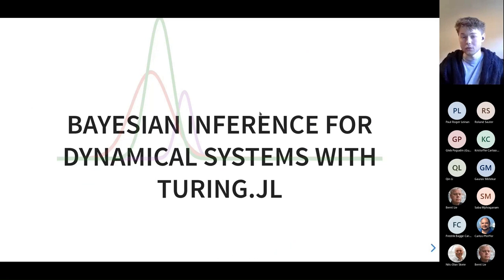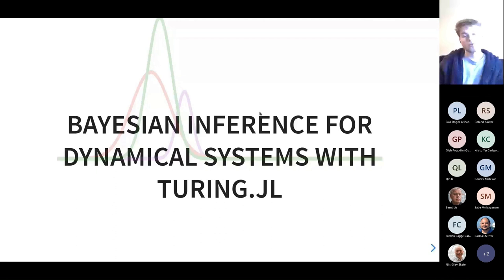I'm Tor Fjelder, a PhD student at Cambridge University in the machine learning lab. I work mainly on methodology for Bayesian inference, and I also work on a probabilistic programming language called Turing.jl. I've been doing that for quite a few years and that's what I'll be talking about today.